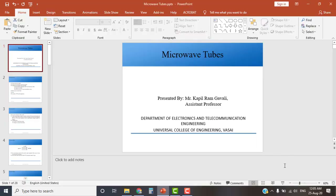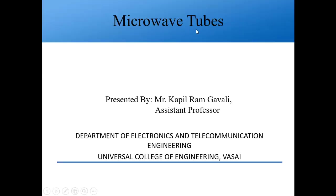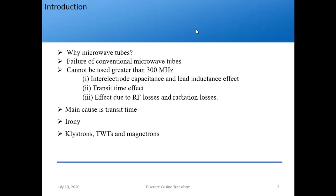Yesterday we started module 3, which is called microwave tubes. We studied why microwave tubes were required, because conventional tubes like triodes, tetrodes, and pentodes were failing at very high frequencies, especially above 300 megahertz. The causes of failure were inter-electrode capacitance, lead inductance effect, transit time effect, RF losses, and radiation losses. Researchers then used the transit time effect to their advantage to design microwave tubes working above 300 MHz.